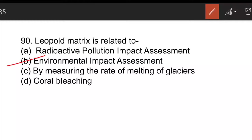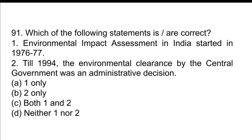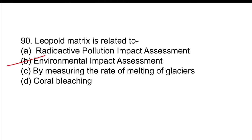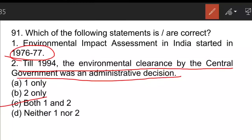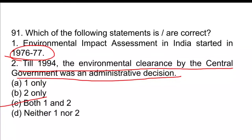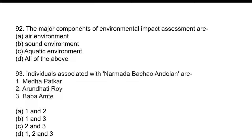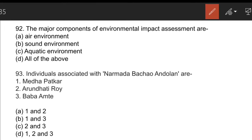The Leopold Matrix is related to Environmental Impact Assessment (EIA). EIA is one of the tools available to planners to harmonize development activities with the environment. EIA in India started in 1976–77. Until 1994, environmental clearance by the central government was an administrative decision. The major components of EIA include the air environment, sound environment, and aquatic environment.